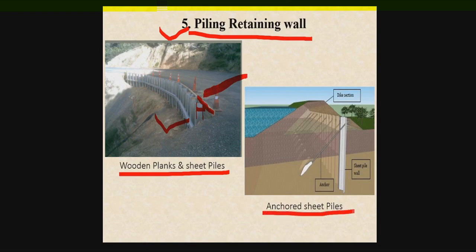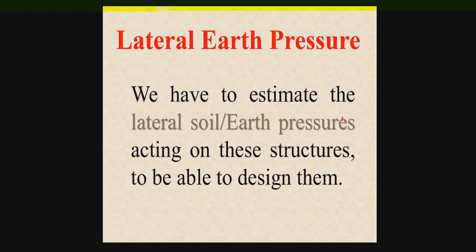We can also use the anchored sheet pile wall, in which slopes will be anchored and the anchors will be connected with the sheet piles. These are different examples of retaining walls which are subjected to earth masses, slopes, and earth pressures. In order to design all these structures, we must have an estimation of the lateral earth pressures in order to be able to properly design them.